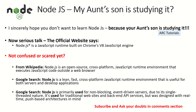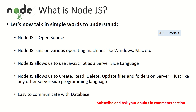Let me break it down for you in simple language. Node.js is an open source project — very important upfront. It's open source, which means there is no cost, no license, no proprietary dependency. Anybody can learn, download, and contribute. Number two, Node.js runs on various operating systems. Since it's open source, it's not restricting you to any single machine. Whether you are on Windows, Mac, Linux, or Ubuntu, it runs anywhere — on a normal laptop or a server.